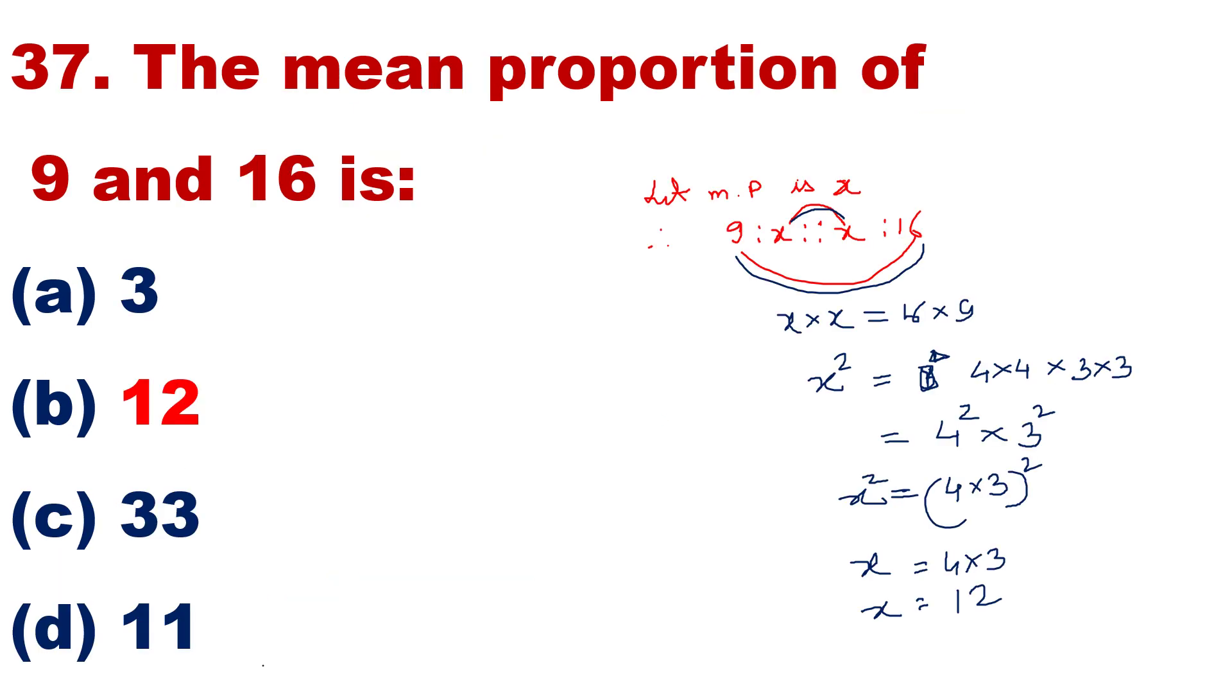Question number 37: The mean proportion of the 9 and 16 is. This is the proper method. How to find out the mean proportion, please try to learn it from your class 6 and to the competitive examination. This is very important question.